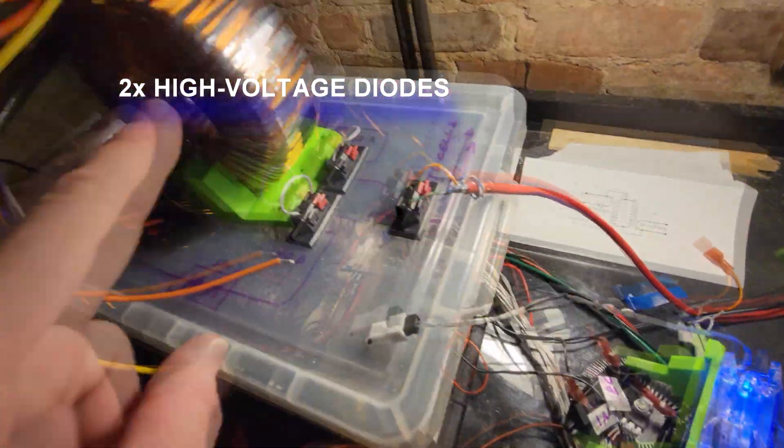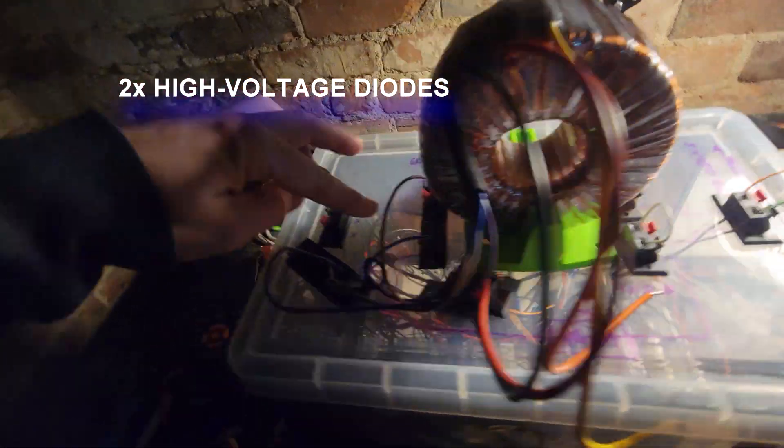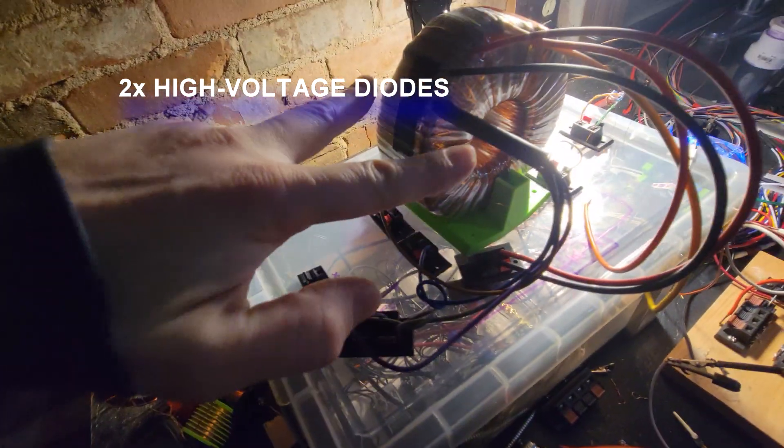I do have two diodes on here. One out from each side of this transformer. Pulsing at 608 Hertz at 67% duty cycle.